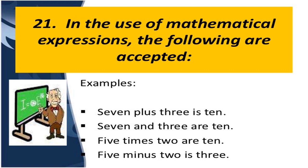Next rule: in the use of mathematical expressions, '7 plus 3 is 10' uses a singular verb. '7 and 3 are 10' — depending on the meaning, plural verb. Similarly, '5 times 2 are 10' but '5 minus 2 is 3.' That means if we use plus or minus written as words, we use the singular form. If we use other words like 'and' or 'times', we use the plural form.